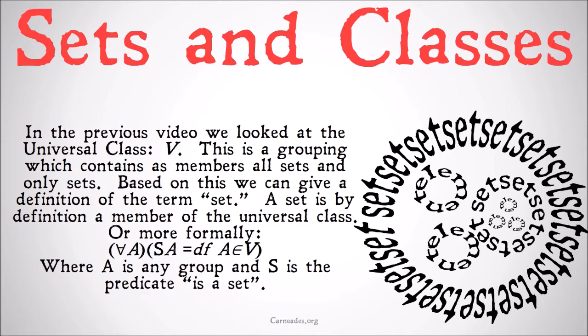In the previous video we looked at the universal class, V. This is a grouping which contains as members all sets and only sets. Based on this, we can give a more formal definition of the term set. A set is by definition a member of the universal class. Or more formally, for all A, A is a set is by definition A is a member of V, the universal class.